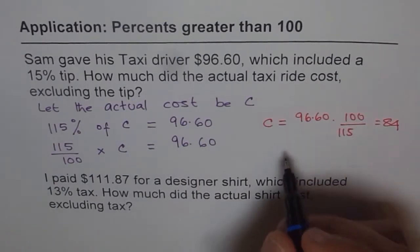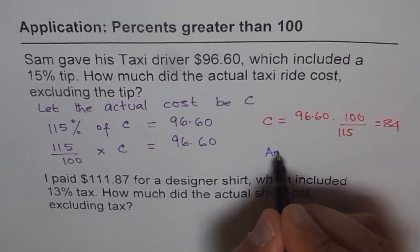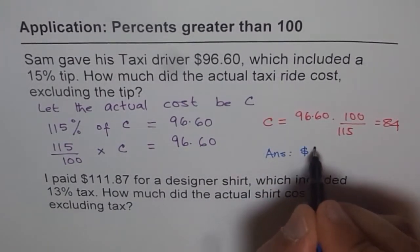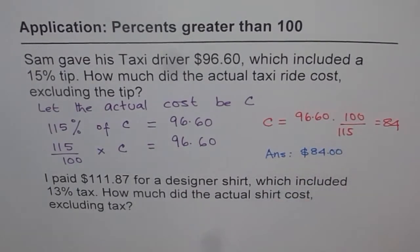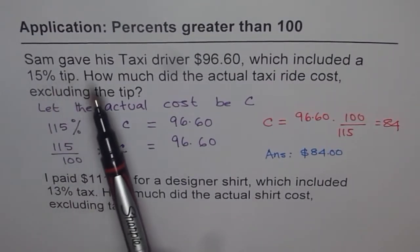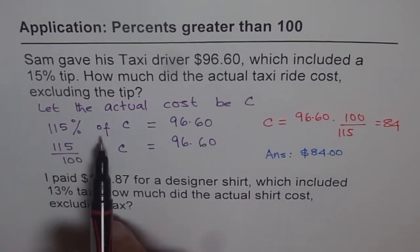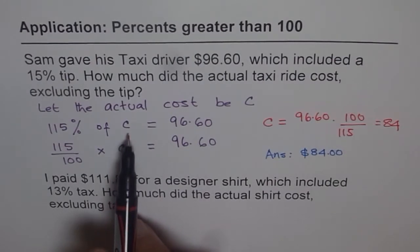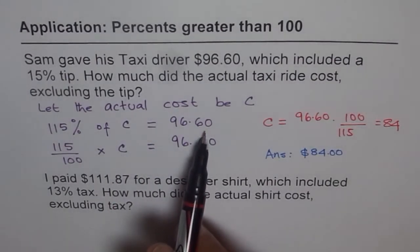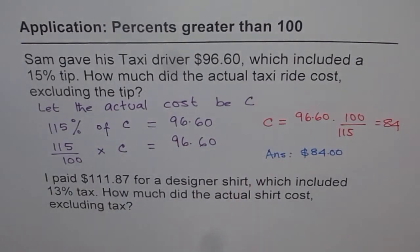And therefore the answer is: the actual cost is $84. That is how you need to do these kinds of questions. Now here is a case where you are paying more than 100%. The tip of 15% is extra on what you were supposed to pay, so it becomes 115%. You paid 115% of the actual cost, and that amounted to $96.60. From this equation, you can easily calculate the cost.